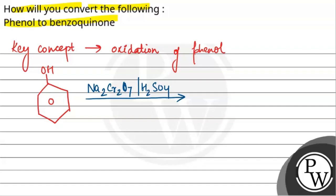Na2Cr2O7 is sodium dichromate and H2SO4 is sulfuric acid. And this is a one-step reaction, so we will get benzoquinone directly.